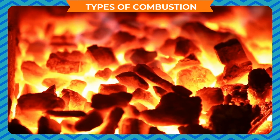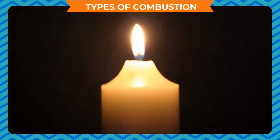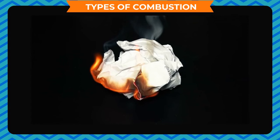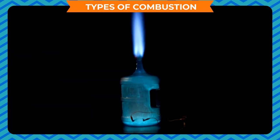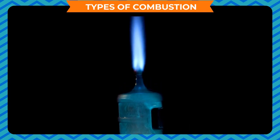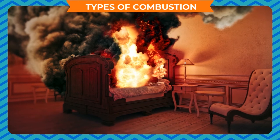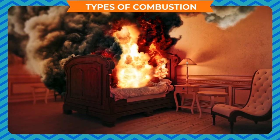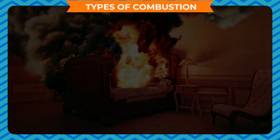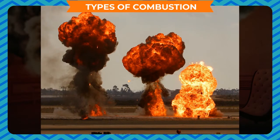Complete combustion occurs in an unlimited supply of air, oxygen in particular — for example, a burning candle. Incomplete combustion takes place when the air is in limited supply — for example, burning of paper — and it leaves ash as a byproduct. When a substance burns rapidly and produces heat and light, it is said to be rapid combustion. When combustion requires no external energy to start, it is called spontaneous combustion. When the reaction occurs very rapidly with evolution of heat, light, and sound, it is called explosive combustion — for example, blowing up of dynamite.